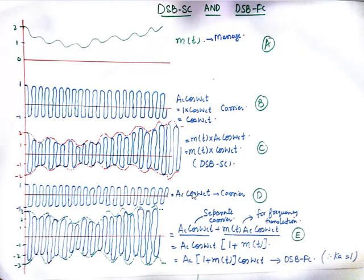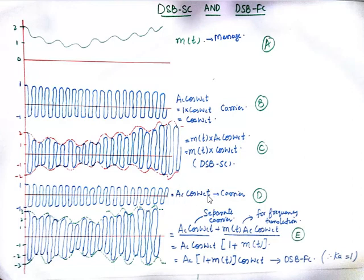Now when I talk about double sideband full carrier: this is double sideband suppressed carrier, and now this is double sideband full carrier. What I do is write the carrier wave AC·cos(Ωc·T) again — here I was taking AC equal to 1 for simplicity. The wave labeled A is actually the addition of wave D and wave C, where wave D is the carrier AC·cos(Ωc·T).